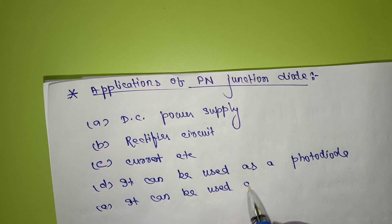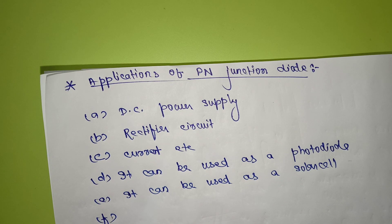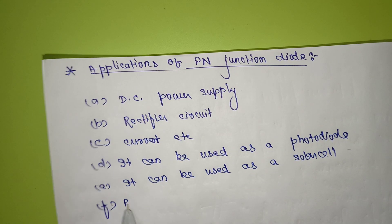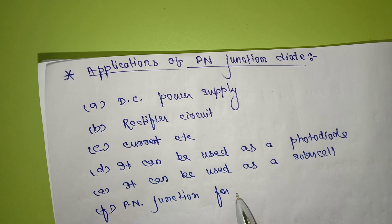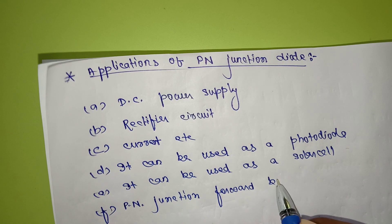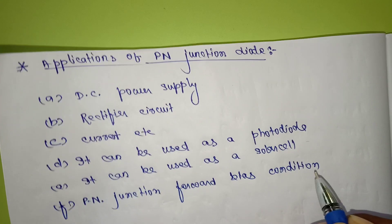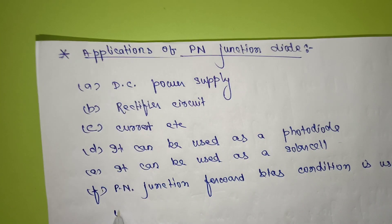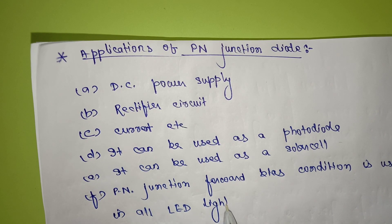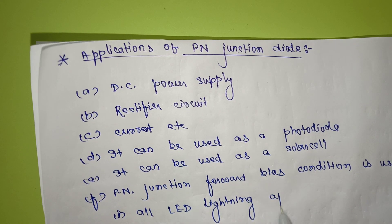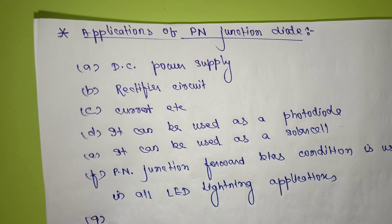PN junction forward bias condition is used in all LED lighting applications.